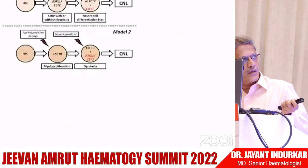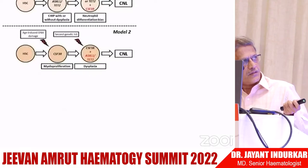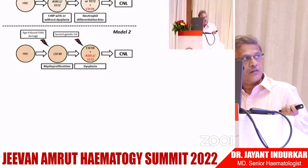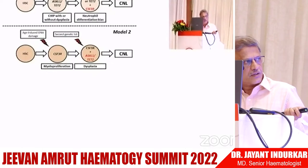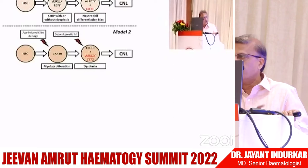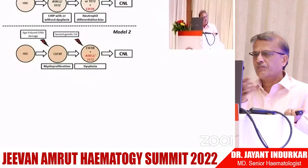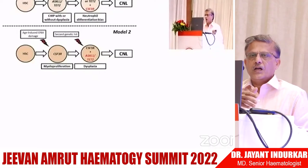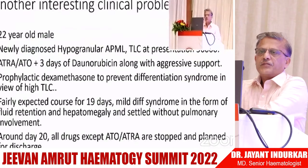The pathogenesis: if the first hit is an ASXL1 mutation — CHIP with or without dysplasia — and the second hit is ASXL1 or SETBP1 then CSF3R, this presents as MDS/MPN. If the first hit is CSF3R followed by ASXL1, the result is myeloproliferation presenting as chronic neutrophilic leukemia. This is a simplified overview of how the disease can present in both ways.